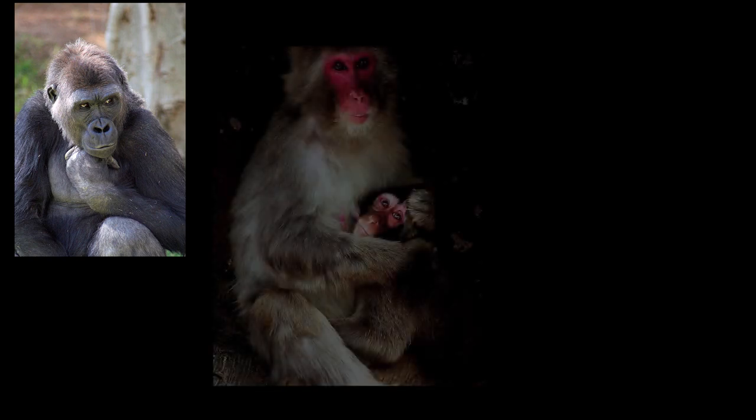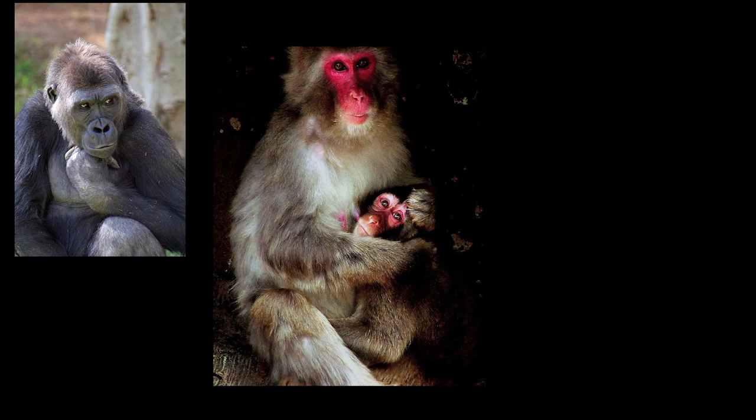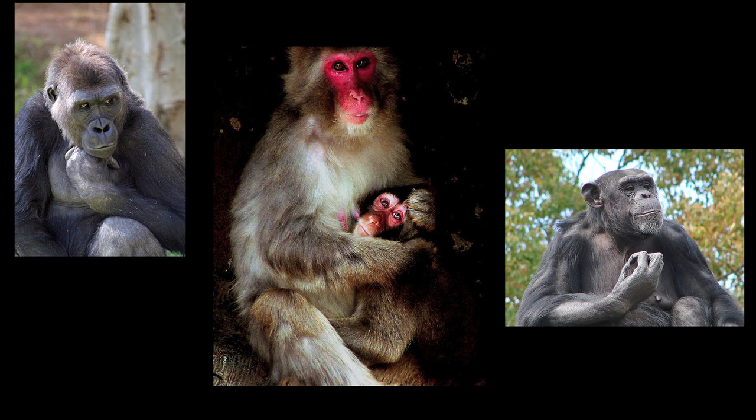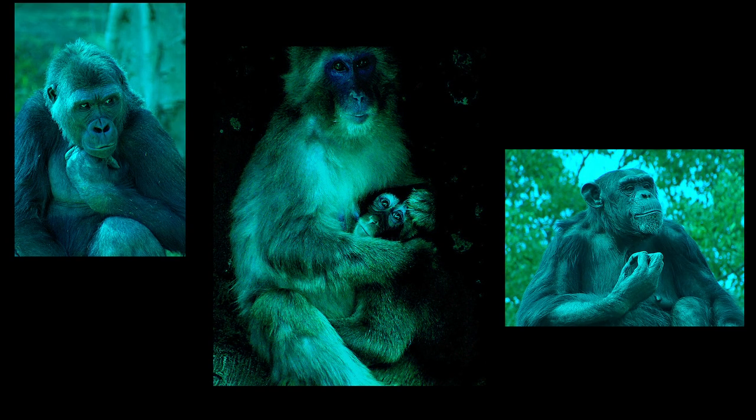Some animals can perceive some of the same colors that we do, and they also can perceive some colors that we cannot. Also, we can perceive colors that some animals cannot. For example, some primates can see a mixture of reds, blues, and greens — what we call trichromatic vision, like us. Other primates can see a mixture of blues and greens but not reds — they are considered dichromatic.